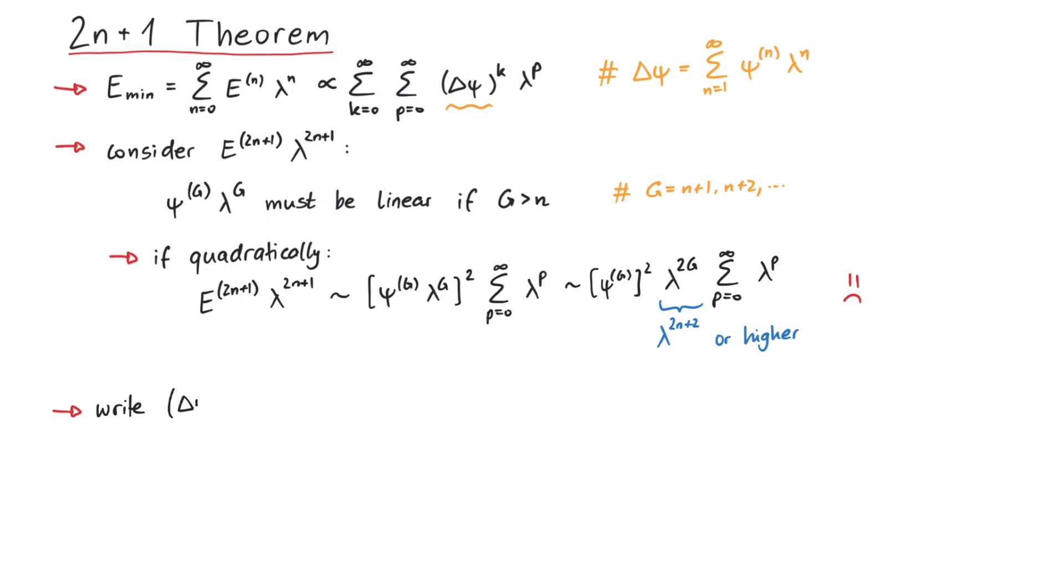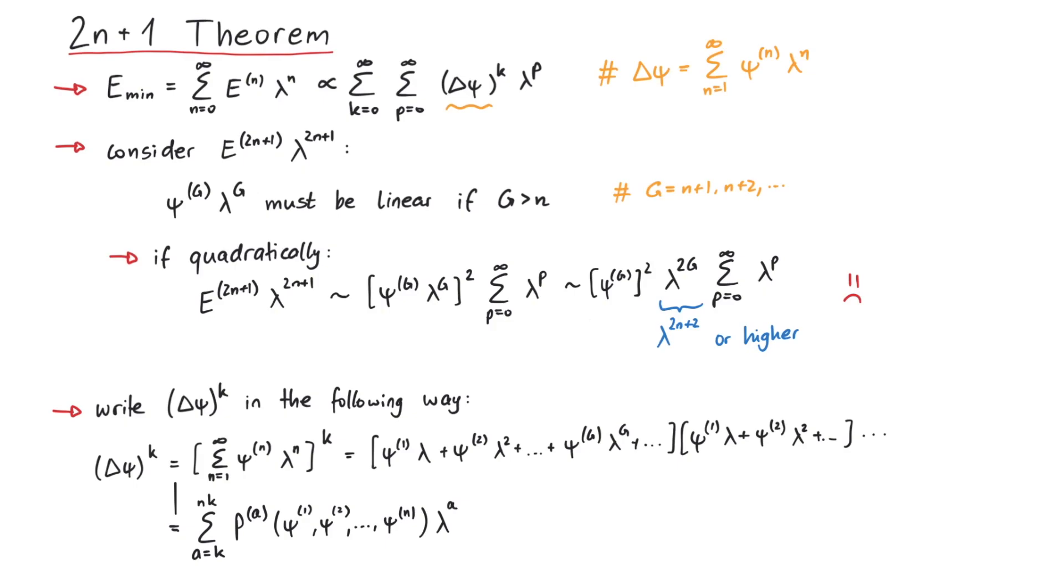With this in mind, we can now write the product of k copies of delta psi in the following way. First, we have some terms that do not have any psi_g in them, only lower orders. This will be some polynomial of order a, where we can start from k and go up to n times k. This is because the lowest possible choice is to take only psi_1, psi_1, psi_1, which results in a factor of lambda to the power of k. And the highest choice is to use only psi_n, psi_n, psi_n, which would lead to lambda to the power of n times k.